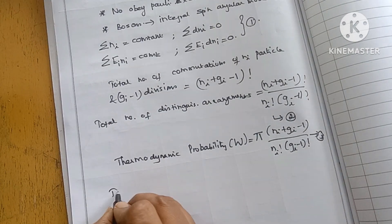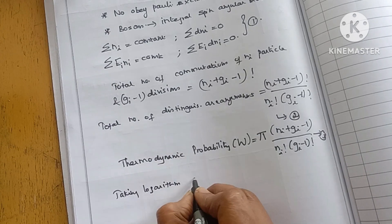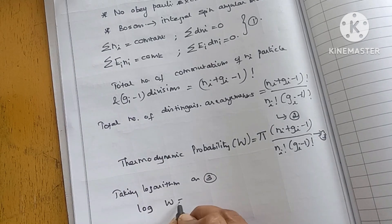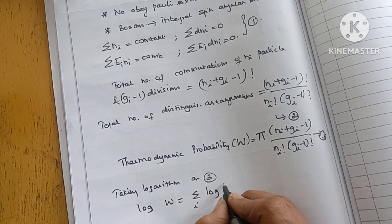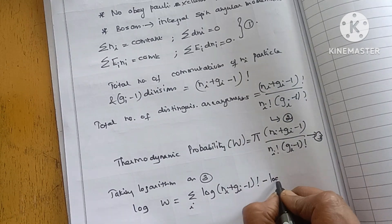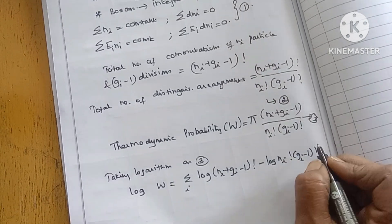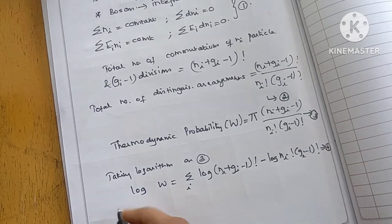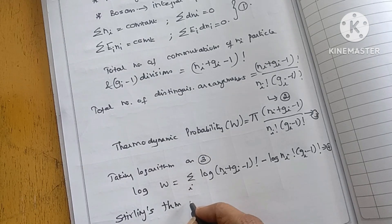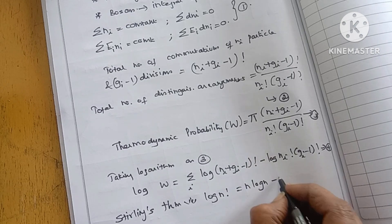Taking logarithm on both sides, we get log W equal to summation over i of log(Ni + Gi - 1) factorial minus log(Ni factorial) minus log(Gi - 1) factorial. Here we apply Stirling's theorem: log(N!) can be written as N log N minus N.